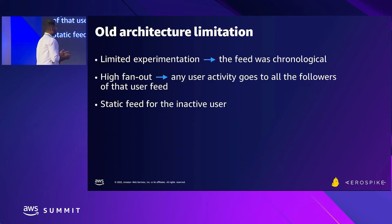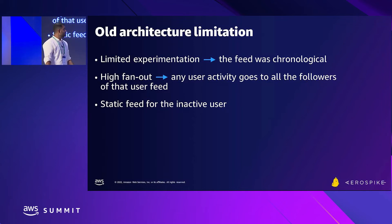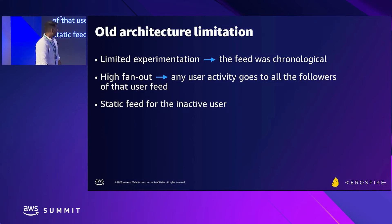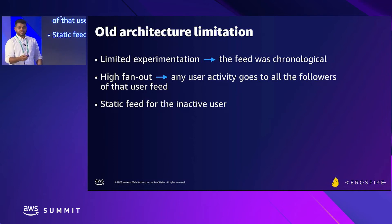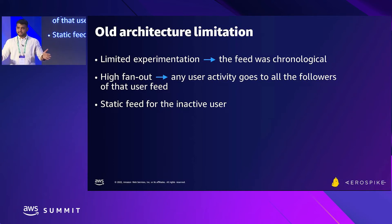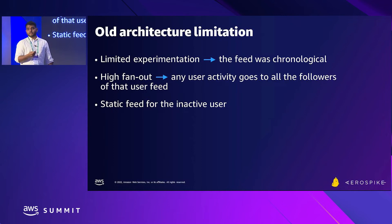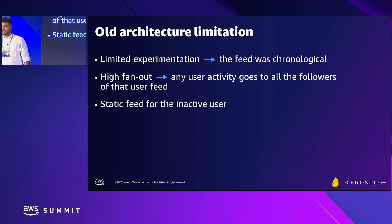We didn't start this way. Initially we had a plain vanilla timeline feed — just fan-out to everyone's feed when a user posted. The biggest problem was high fan-out latency: as follower counts grew, the time between a Koo being created (t1) and it appearing in the last follower's feed (t2) increased significantly. Inactive users saw stale feeds, raised complaints, and our ratings went down. We suffered heavy losses from this architecture.